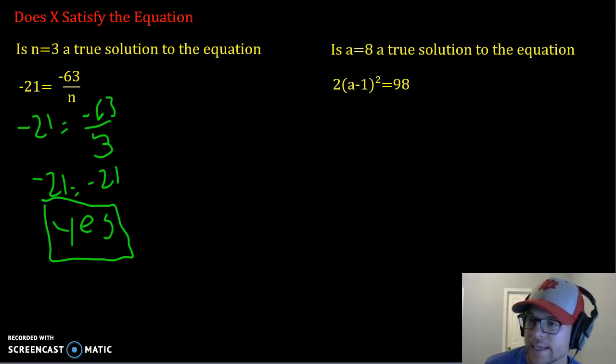Over on the right-hand side, is a equals 8 a true solution to the equation? 2 times the quantity of a minus 1 squared equals 98. So first thing we're going to do is just substitute 8 into the a.